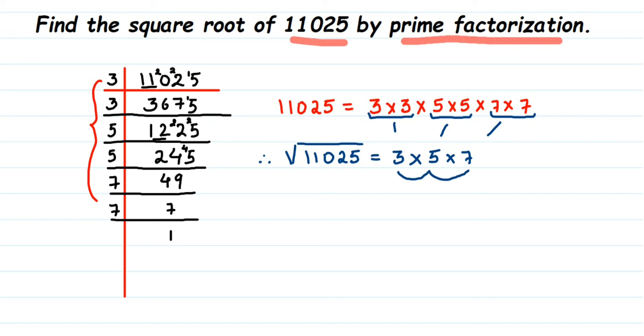So square root of 11,025 is 105. That's it. I hope this question is clear. If you have any questions or doubts, drop a comment. I'll try to make a video on it. Thank you so much for watching.